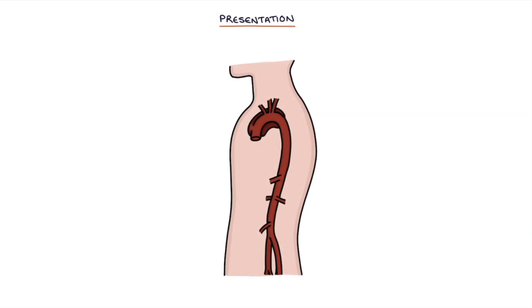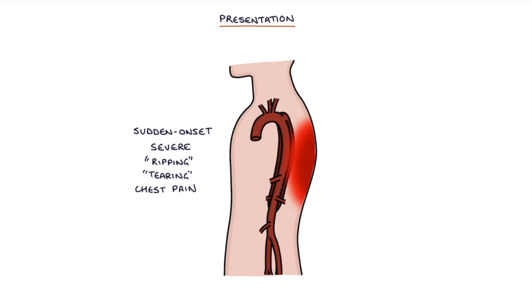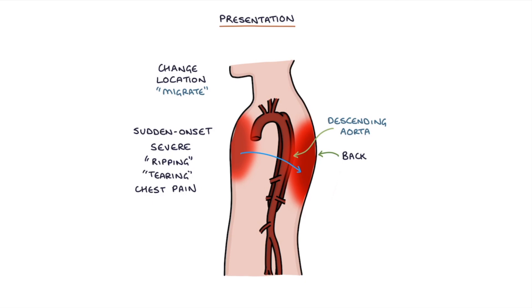Let's talk about the presentation. Aortic dissection can be difficult to spot and the diagnosis is often missed. The typical presentation is a sudden onset, severe, ripping or tearing chest pain. The pain may be in the anterior chest when the ascending aorta is affected, or in the back if the descending aorta is affected. The pain may change location or migrate over time. Some patients with aortic dissection do not have chest pain.